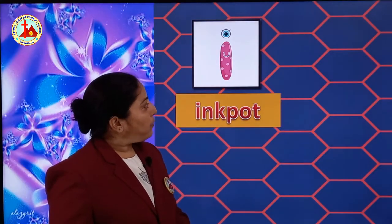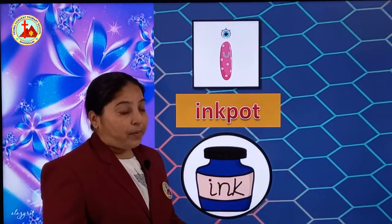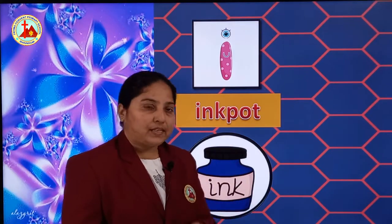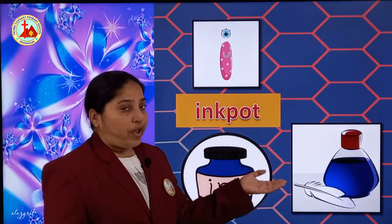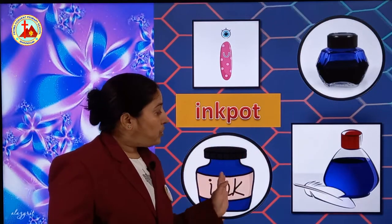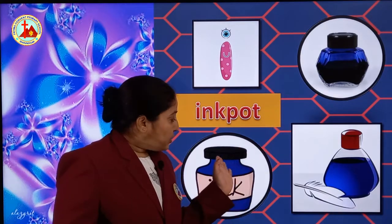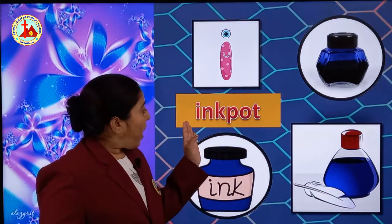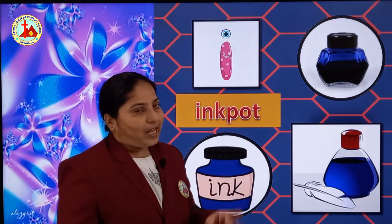Now next one is I for ink pot. You all know, right, because we have seen all the pictures in the capital letters and the pictures are the same. I for ink pot. Here are the pictures of different shaped ink pots. Now let's see the spelling: I, N, K, P, O, T — ink pot.